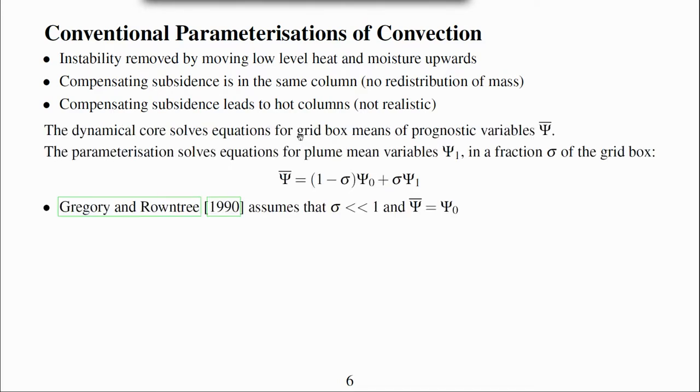Dynamical cores solve equations for grid box means of prognostic variables which I will denote ψ bar for a variable ψ. The parameterisation solves equations for plume mean variables which I will denote ψ₁ in a fraction σ of the grid box. The grid box mean value is the area weighted sum of the plume mean variable and the value not in the plume, ψ₀.